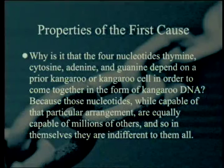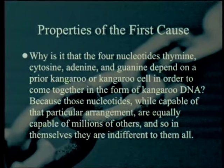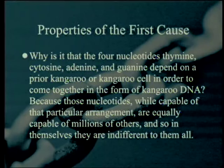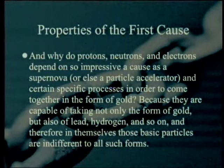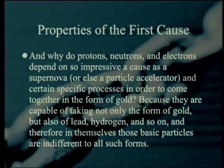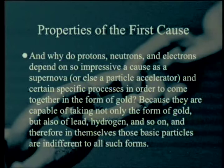Why do the four nucleotides — thymine, cytosine, adenine, and guanine — depend on a prior kangaroo cell in order to come together in the form of kangaroo DNA? Because these nucleotides, while capable of that particular arrangement, are equally capable of millions of others, and so in themselves they are indifferent to them all. Now interestingly, that's really kind of a design argument. And why do protons, neutrons, and electrons depend on an impressive cause such as a supernova or a particle accelerator in order to come together in the form of gold? Because they're capable of taking not only the form of gold but also of lead, hydrogen, and so on — and therefore, in themselves, those basic particles are indifferent to all such forms.